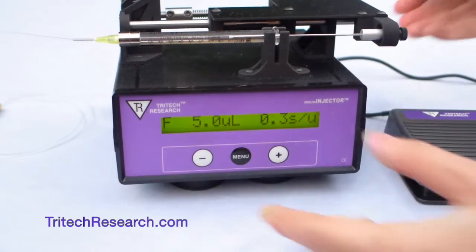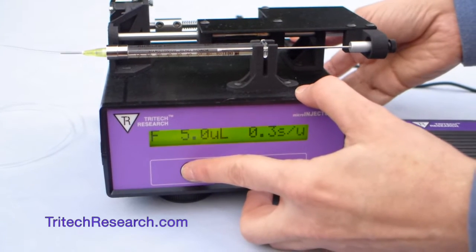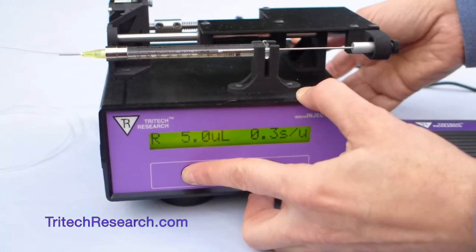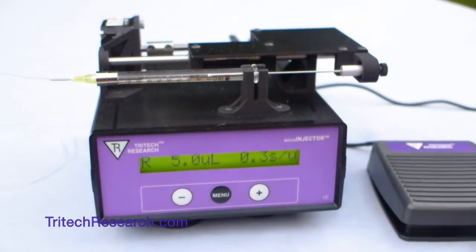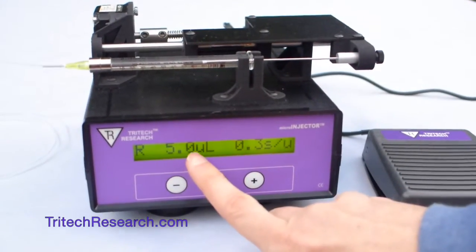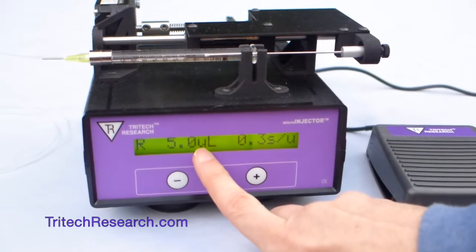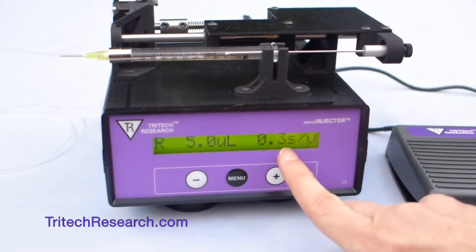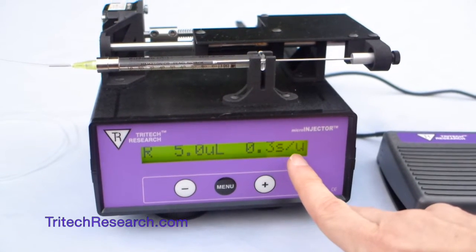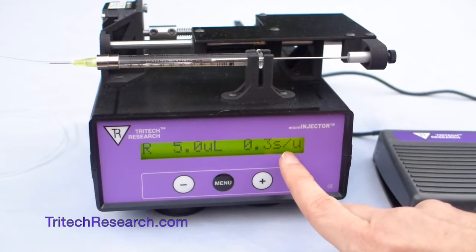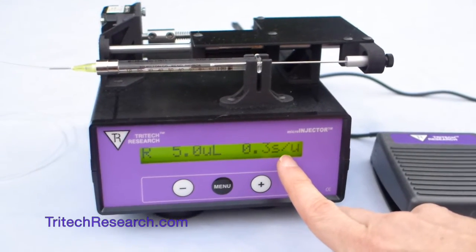That can be controlled by pushing the minus button in this mode, so it can go reverse or forward, depending on which you do there. And then the other two things, this shows 5 microliters, that's the amount that it's set to inject, and a speed of 0.3 seconds per microliter, so that means it's going to inject the 5 microliters in under 2 seconds.